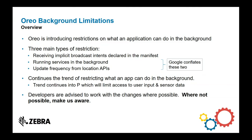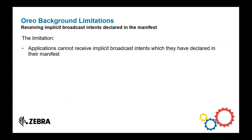There are three main types of restriction. Google breaks this into two types, but I think it makes more sense to list three: first, receiving implicit broadcast intents declared in the manifest; second, limitations on what an application can do in its services when running in the background; and third, how frequently an application can determine the location of the device. Note that these restrictions continue into P as well — more restrictions are coming, so it's worth trying to work with Google's recommendations rather than against them.